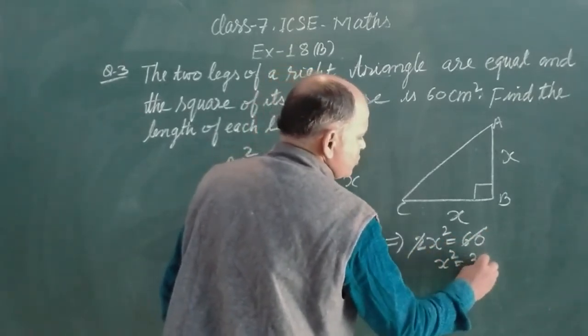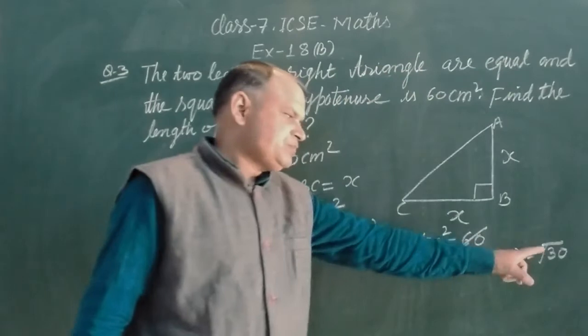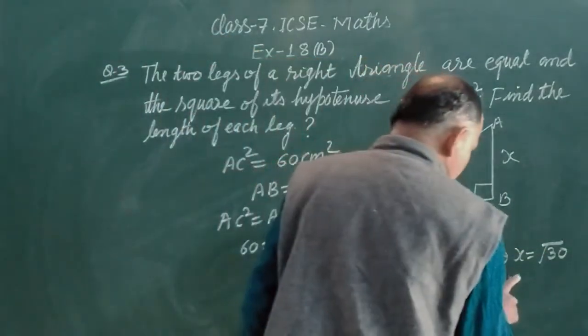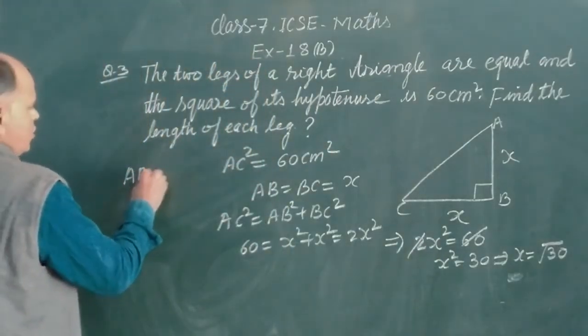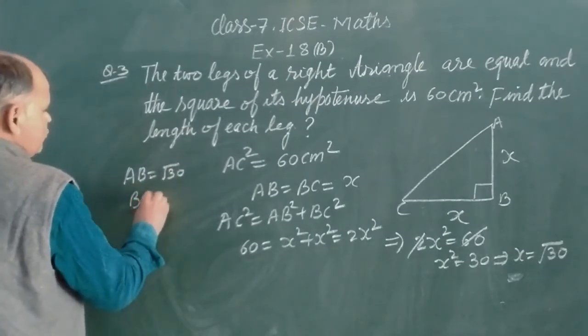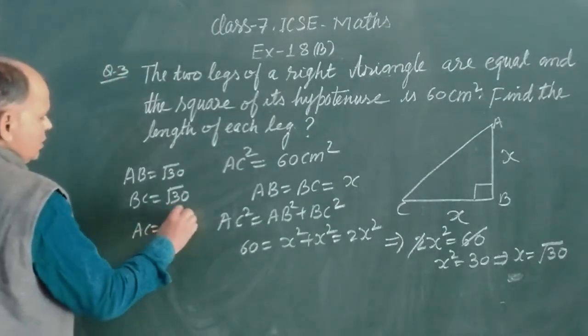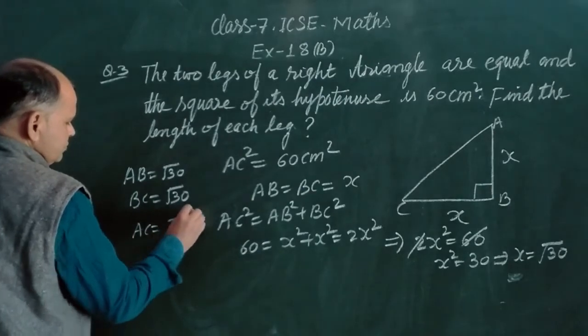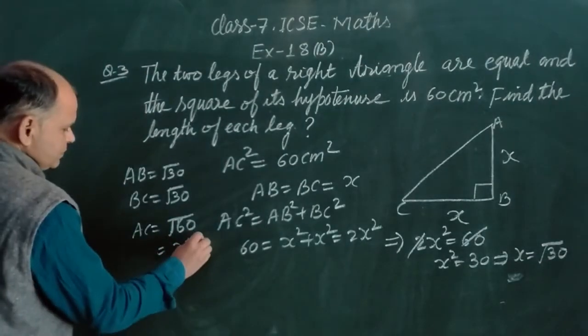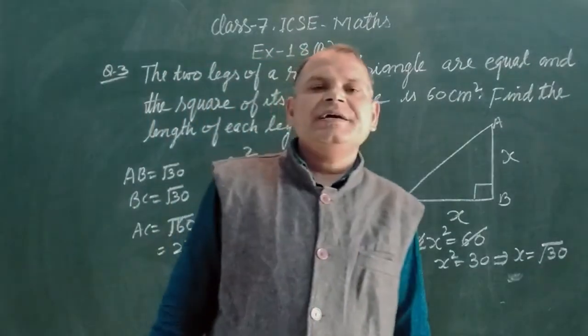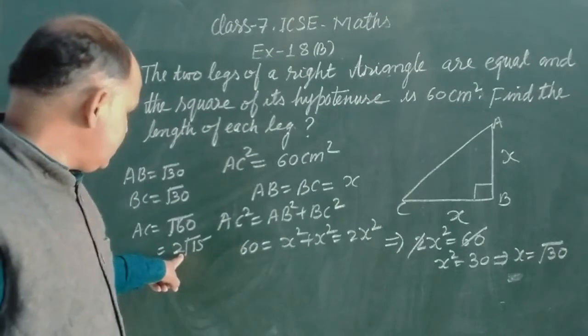So it meant you know that in this, AC square will be AB square plus BC square. So this is 60 and x square plus x square, this is 2x square equal to 60. So x square equal to 30, or we can write x equal to square root 30. So x is root 30. Therefore AB equal to root 30, BC equal to root 30, and AC is how much? Root 60.